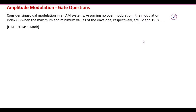Hello everyone. In this video we are going to discuss a few GATE questions from the topic of amplitude modulation. The first question considers a sinusoidal modulation in an amplitude modulation system. Assuming no over-modulation, we need to find the modulation index μ when the maximum and minimum values of the envelope are 3V and 1V respectively. No over-modulation means the μ value is less than one.